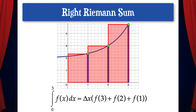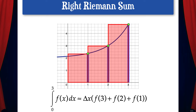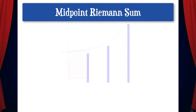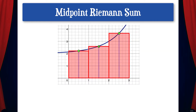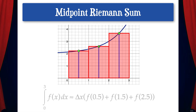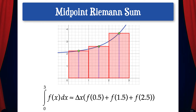We can also have a midpoint Riemann sum, where we use the midpoint of each rectangle to determine the height of each rectangle. In this case, where we're using three rectangles to approximate the area under the curve, the definite integral from 0 to 3 is approximately equal to delta x times the quantity of f of 0.5 plus f of 1.5 plus f of 2.5.